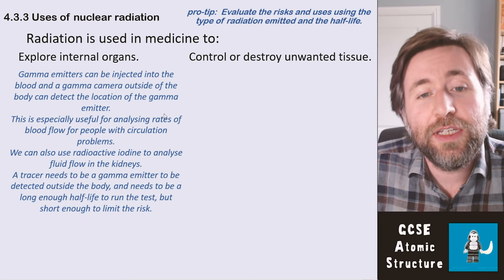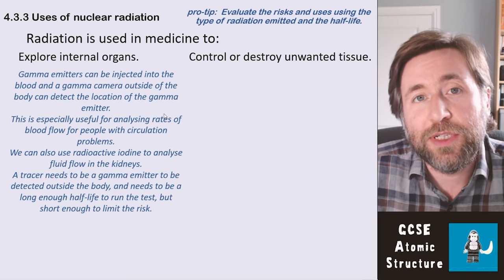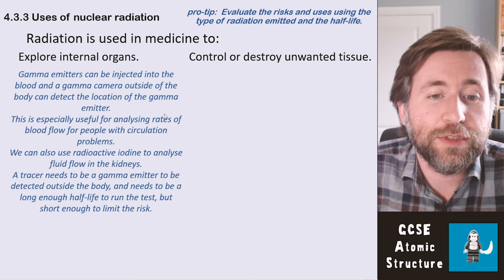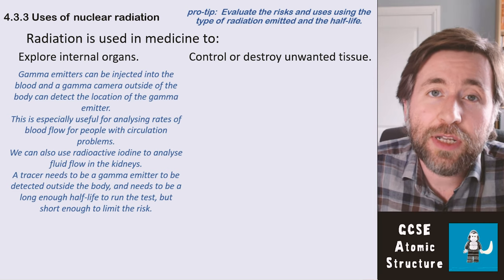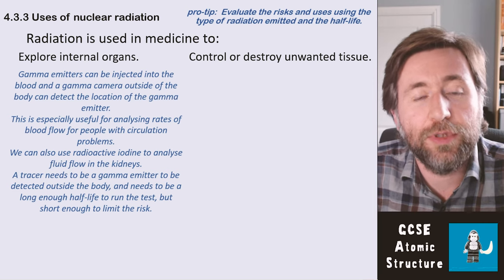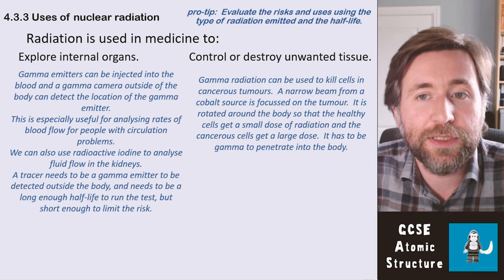A tracer needs to be a gamma emitter because we need to be able to detect it outside the body, and it needs to have a long enough half-life to allow the test to happen, but a short enough half-life to limit the risk.